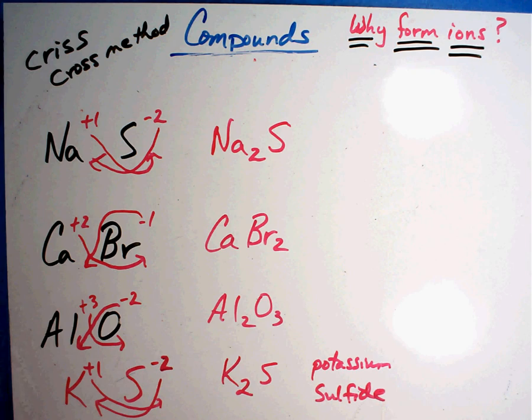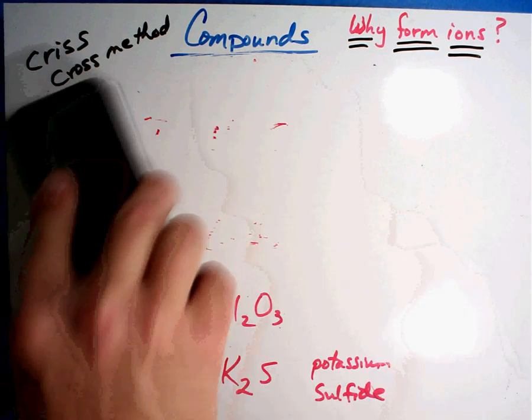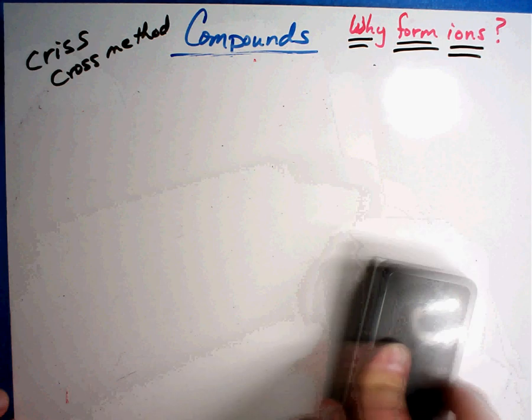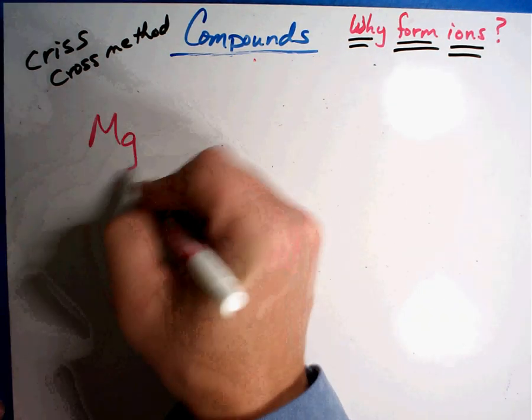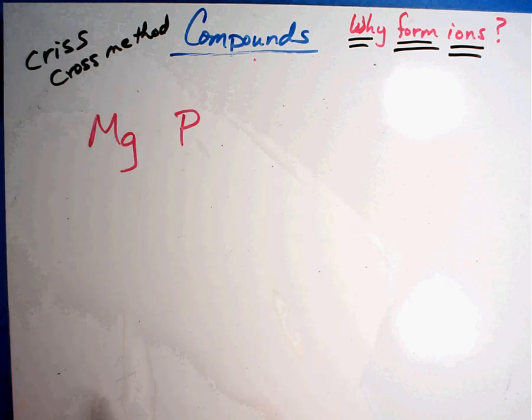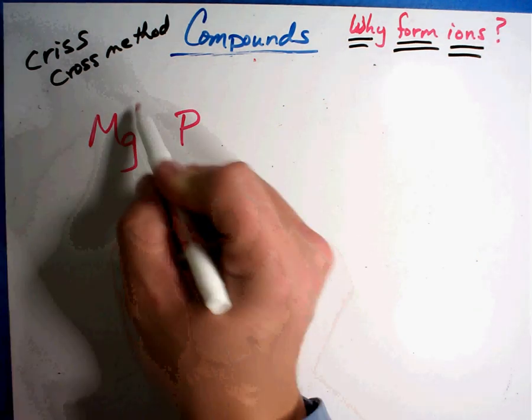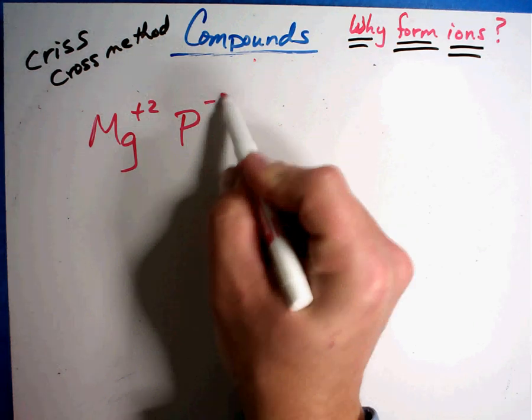So let's look at one or two more and then I'll have you try some on your own. Let's have some new ones. What happens if you had one like Mg and P? Check the charges. Mg plus two, P minus three.